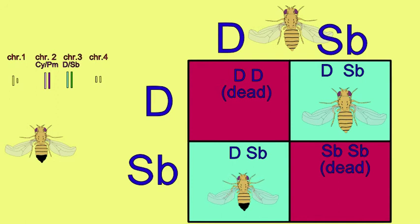And so one can be assured that the progeny of this cross will possess dicete on one chromosome 3 and stubble on the other chromosome 3 because any other combination is lethal.